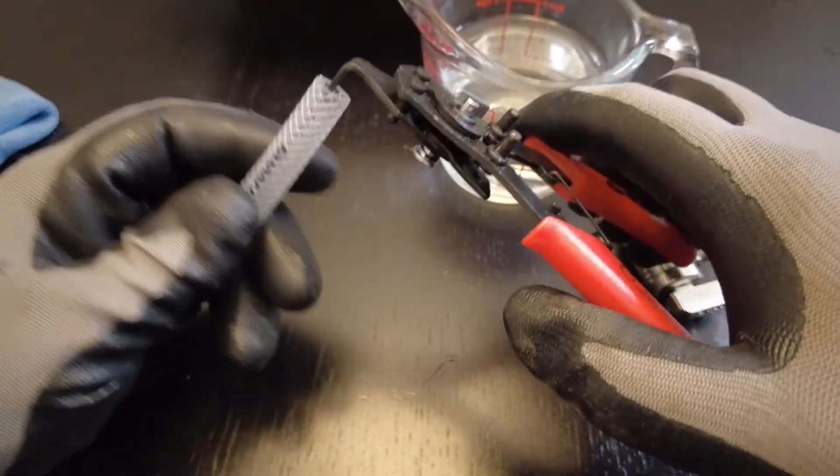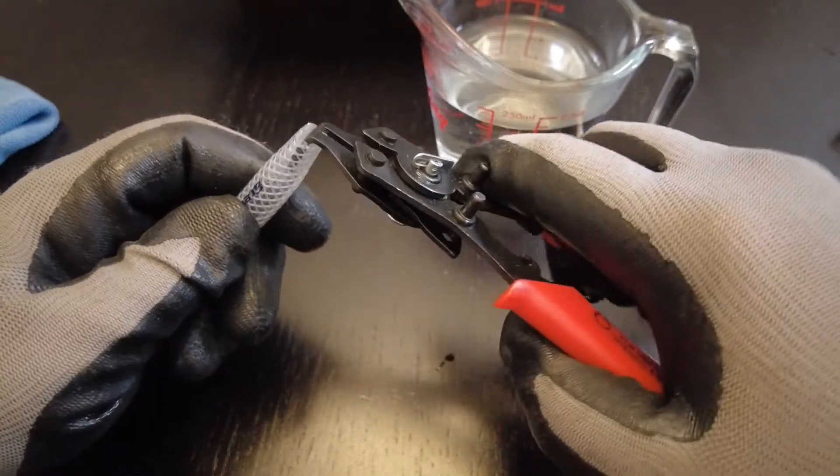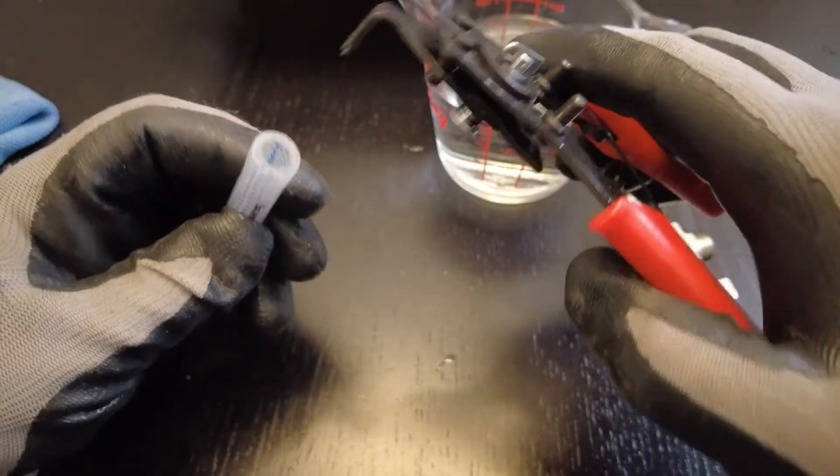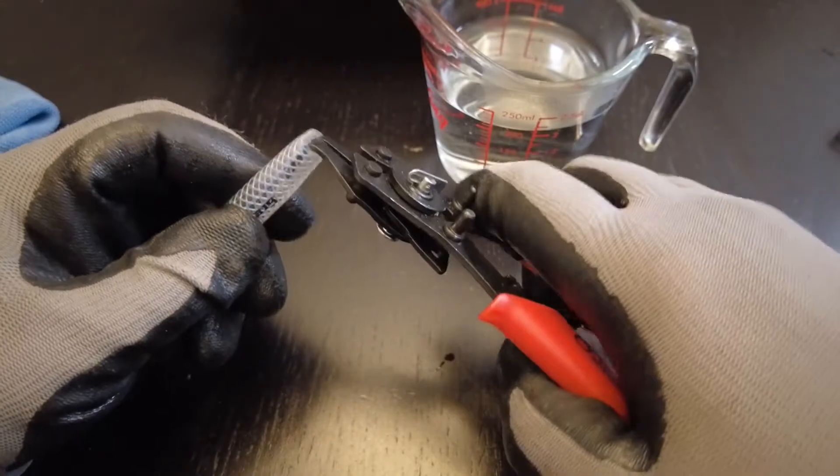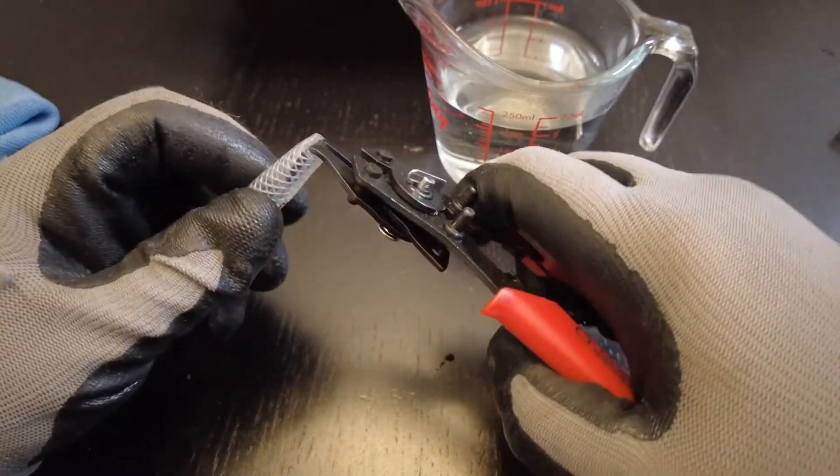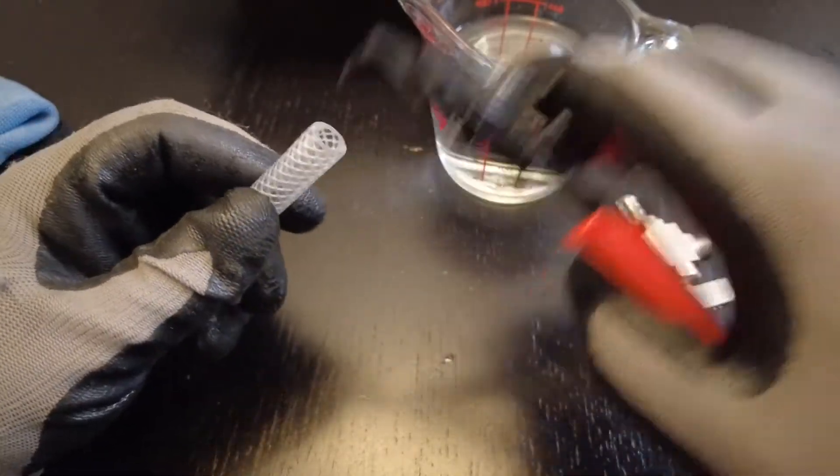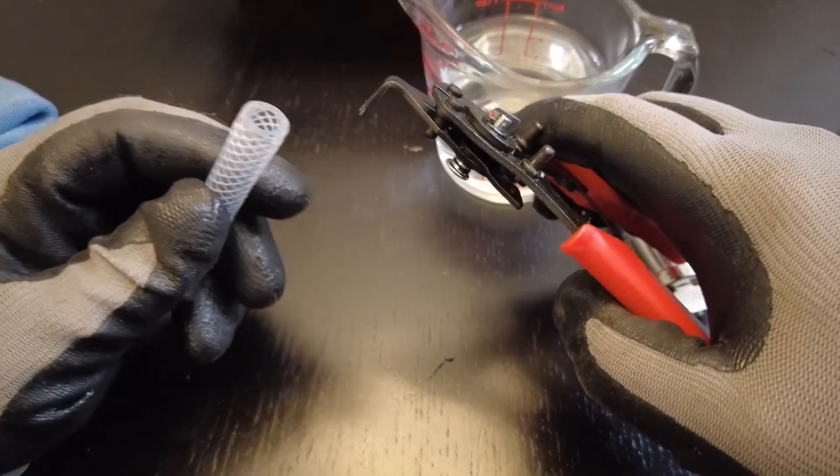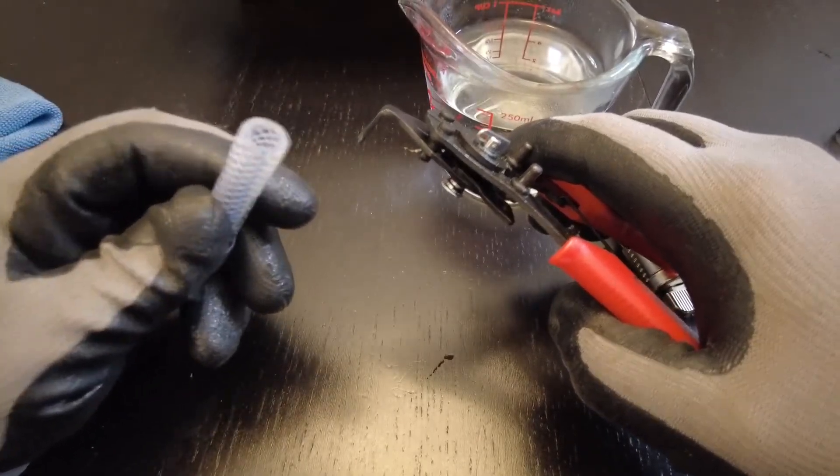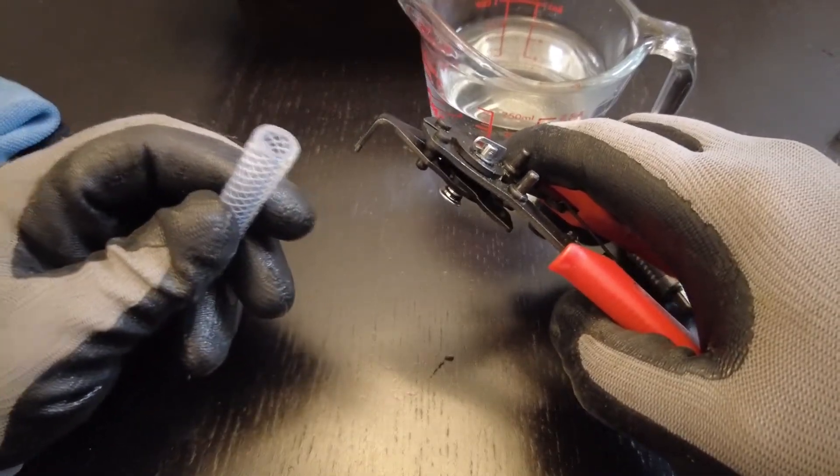So if you use this on cold tubing it stretches but it returns back to its normal shape. As you can see here. So hot tubing stretches and as it cools down it returns to its normal size.